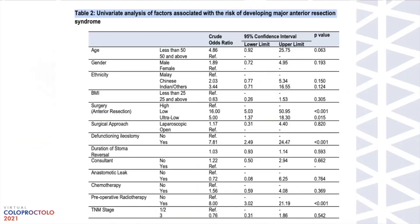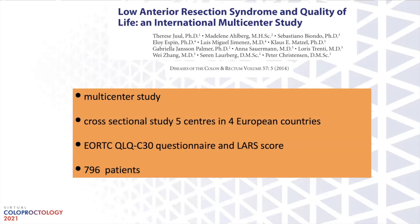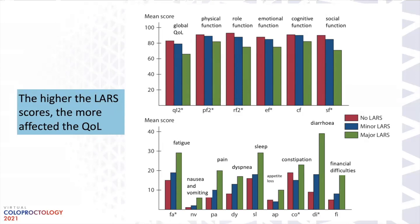When we looked at factors associated with major LAS, our findings concurred with others: patients with major LAS had preoperative radiotherapy, a low anterior resection, and a defunctioning ileostomy. A European multi-centre study of about 800 patients showed that patients with major LAS had lower quality of life, reduced physical and mental function, and higher amounts of fatigue, pain, sleep deprivation, and financial difficulties. They concluded that the higher the LAS score, the more affected the quality of life.